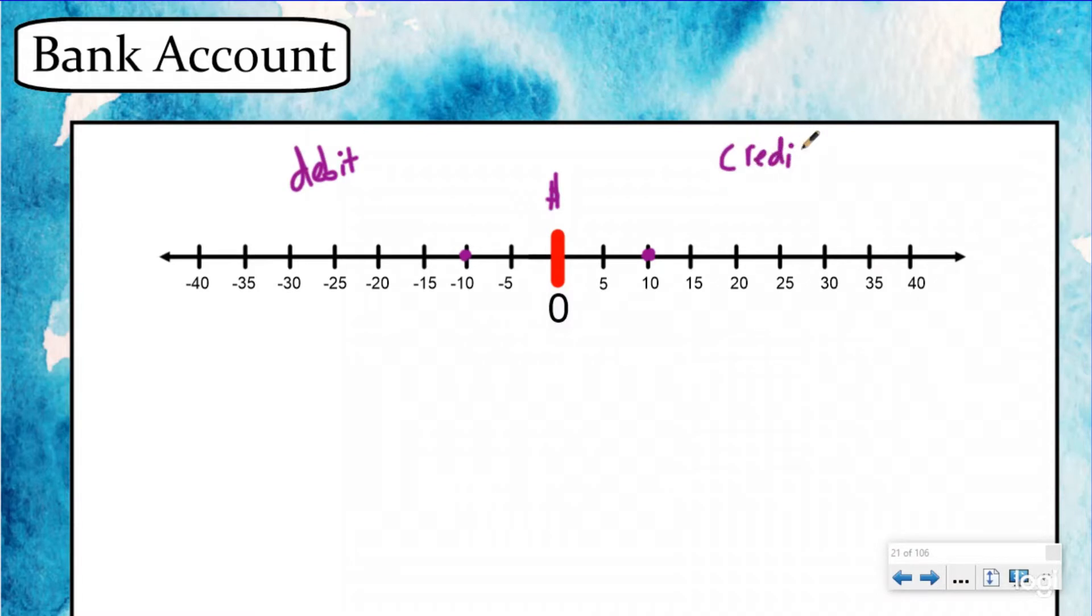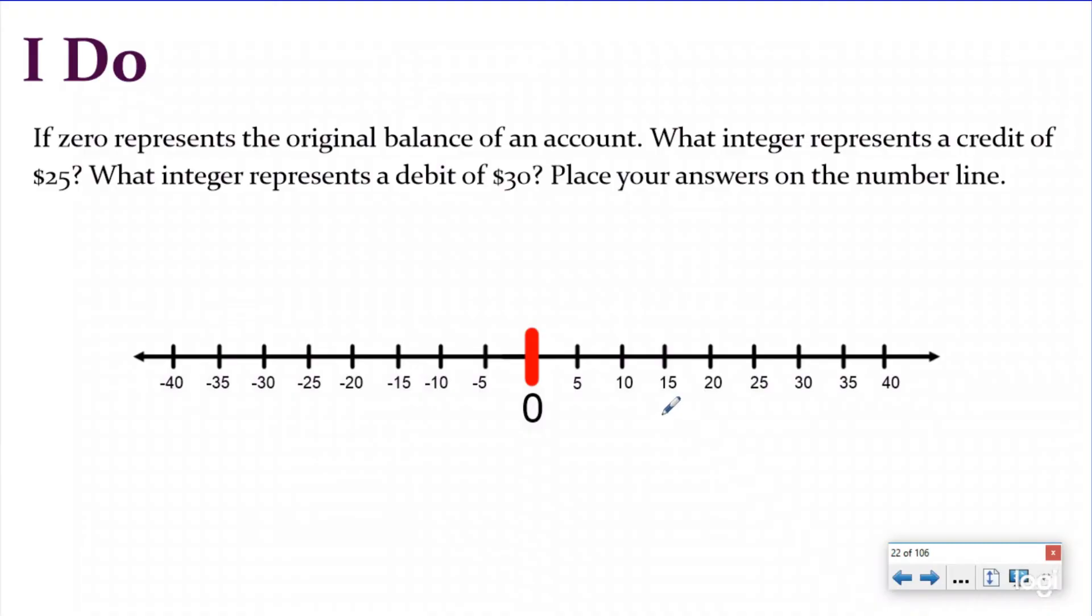Now in our I do problem, we're going to be thinking about zero as the original balance of an account. So what integer represents a credit of 25? What integer represents a debit of 30? We're going to place the answers on the number line.